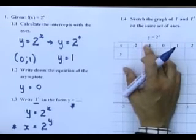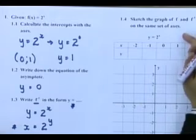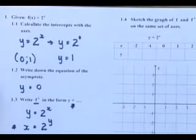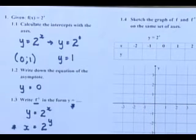1.4, they ask you to sketch the graph of f and f to the power minus 1 on the same set of axes. That means I need to see two graphs over here. Now learners, I need more answers. I need to tell you to give me the answers.